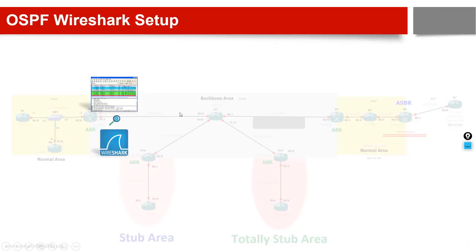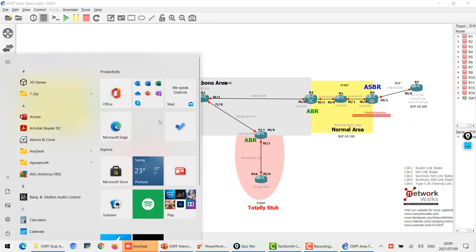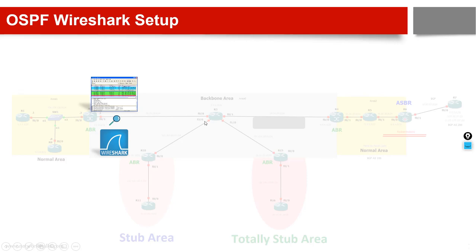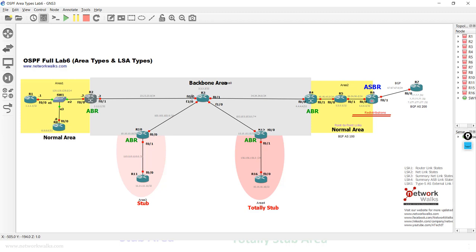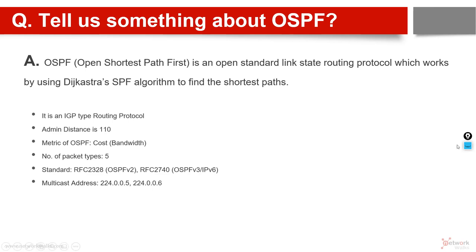Let's start the questions. With this lab I will also input Wireshark filters so that when we reach the advanced level in the next parts of this OSPF interview series, we will go through Wireshark. I hope you know about Wireshark — if not, please go through my Wireshark lecture where I explained what it is, how to install it, and how to use it. Wireshark also comes pre-installed with GNS3. It's very simple — just right-click between router 3 and router 2, then start capture, and we'll do analysis based on that.